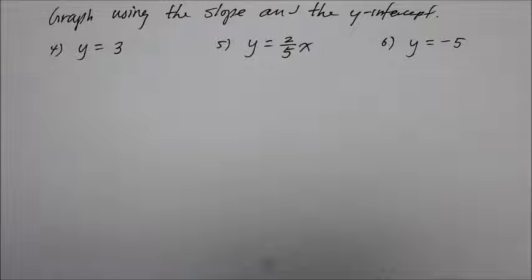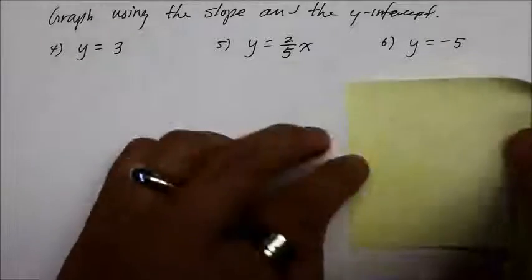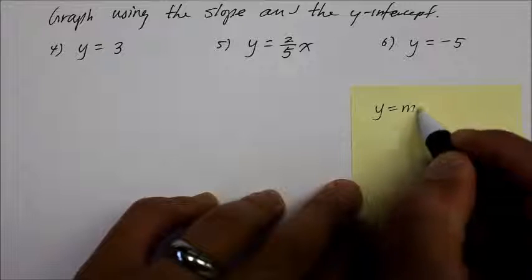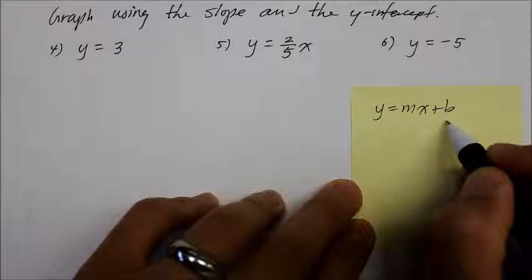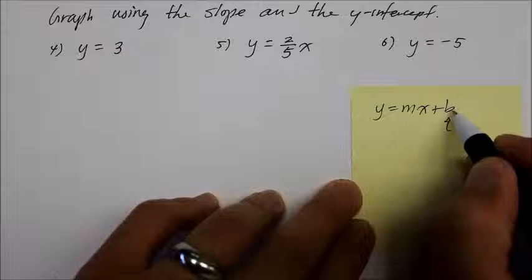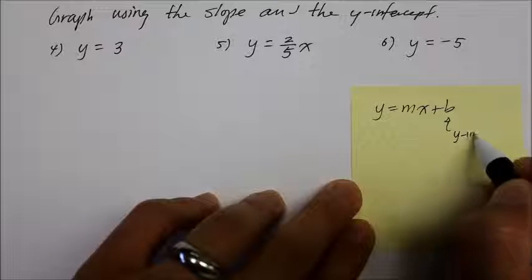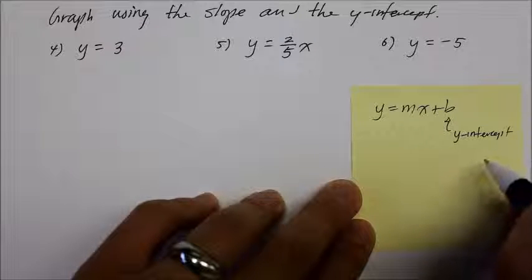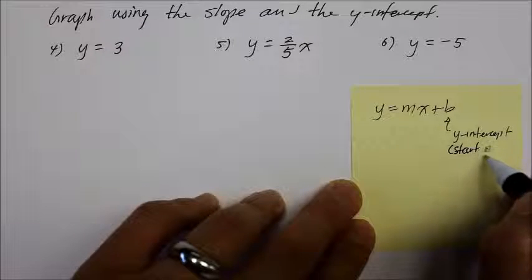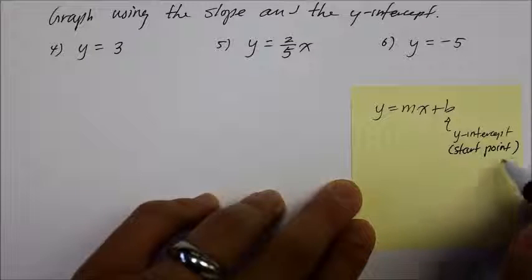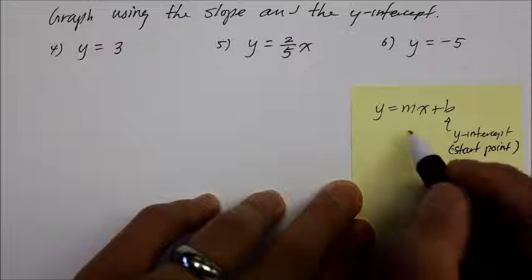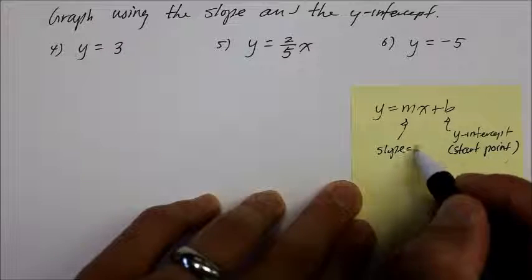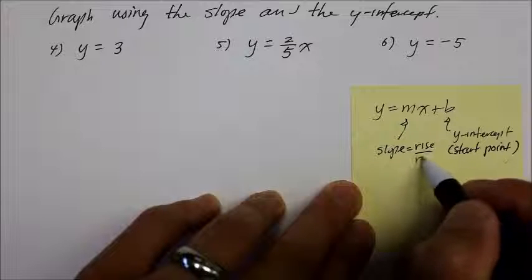And last time I explained, the slope-intercept form in general is written as y equals mx plus b, where the letter b, the number that takes place of the b, is called the y-intercept. And for this instructional video, I sometimes refer to y-intercept as the starting point, because it is from that y-intercept, usually when we graph, that we take this slope that is in rise-over-run form.